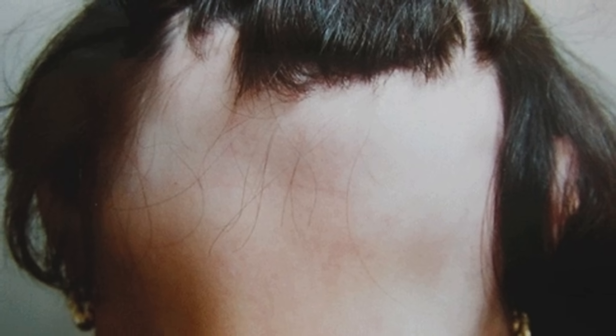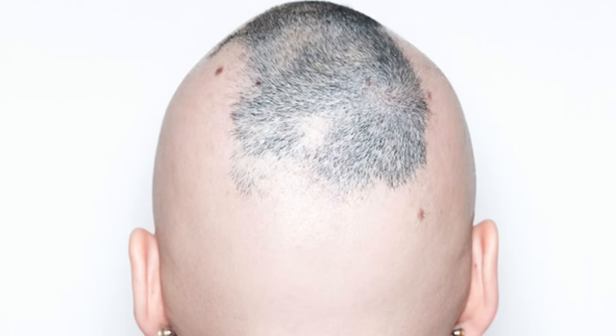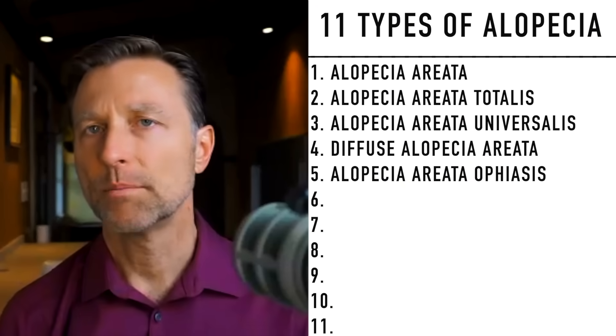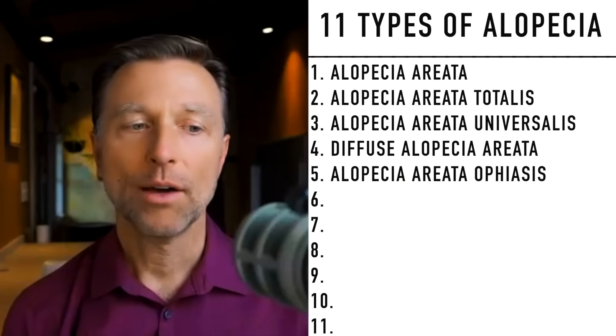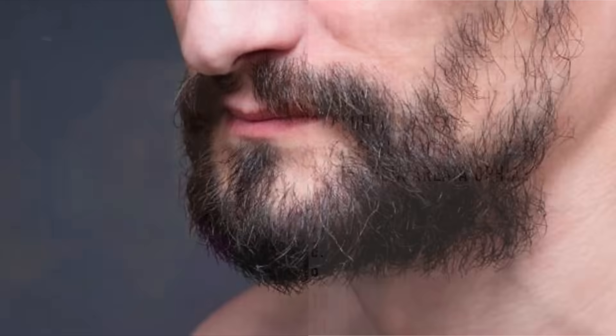The next type is called alopecia areata ophiasis. In this type, you have hair loss on the sides of the head as well as in the lower back part of your skull. This type is really difficult to treat with medications, so natural recommendations would be the preferred approach.